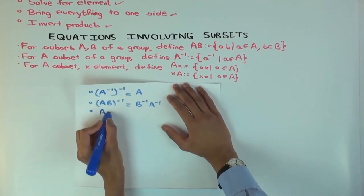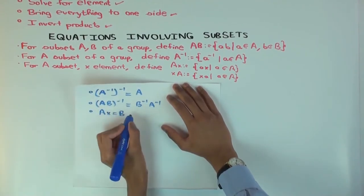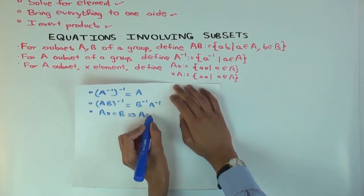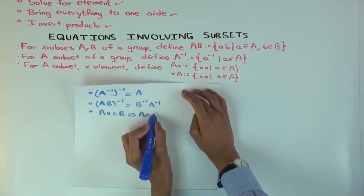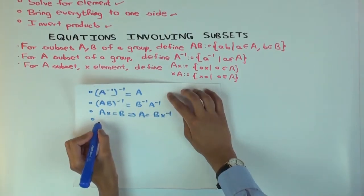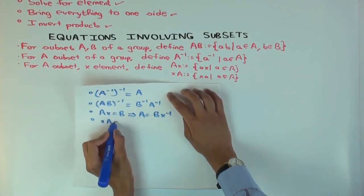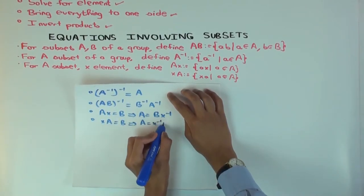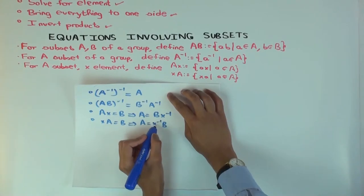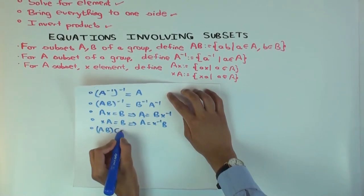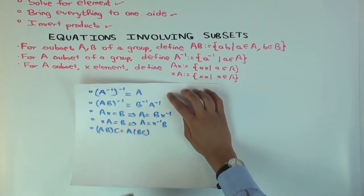Suppose I give you A X equals B. How would you write A in terms of B? If you want to get A in terms of B and X, what is A? B X inverse. If you have X A equals B, then A is what? X inverse B. And you also have associativity of multiplication of subsets. So AB times C is A times BC. So far, so good. These are all true.